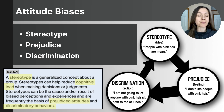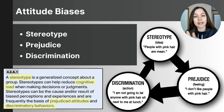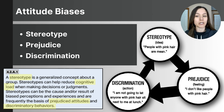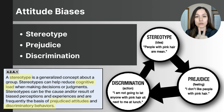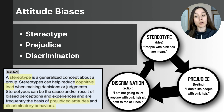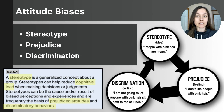Our attitudes are closely interconnected with our beliefs, our emotions, and our actions. An attitude about a social group fits into three components: one, a stereotype, which is a belief or idea; two, prejudice, which is a negative feeling or emotion; and three, discrimination, which is the negative action or behavior.